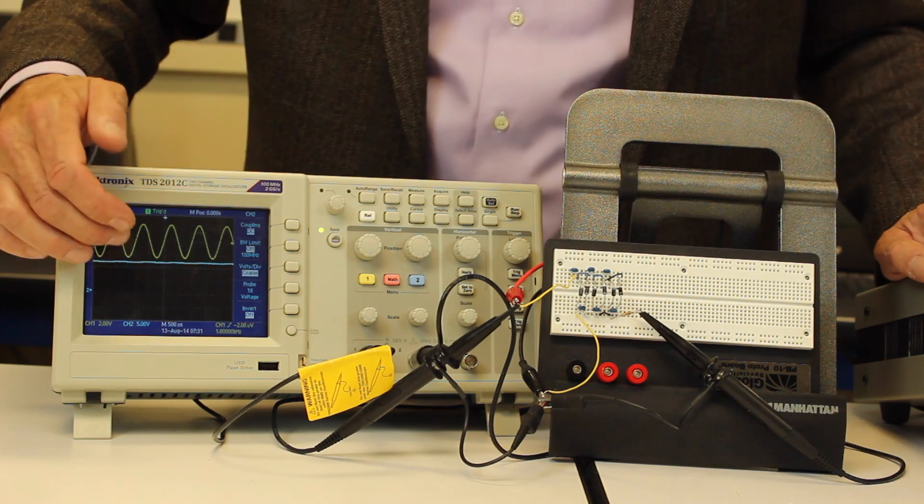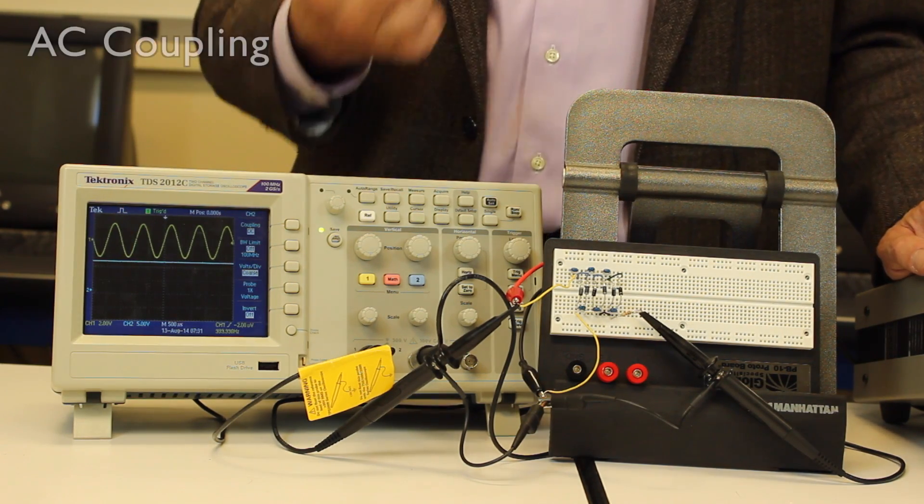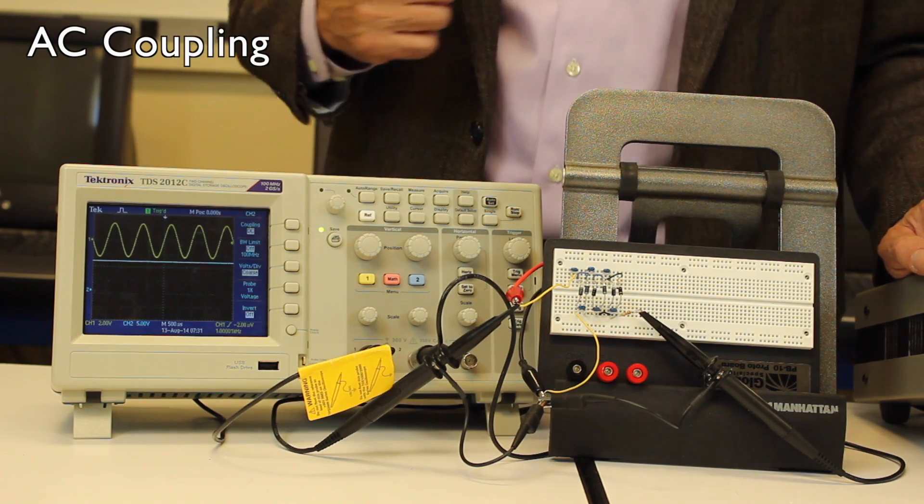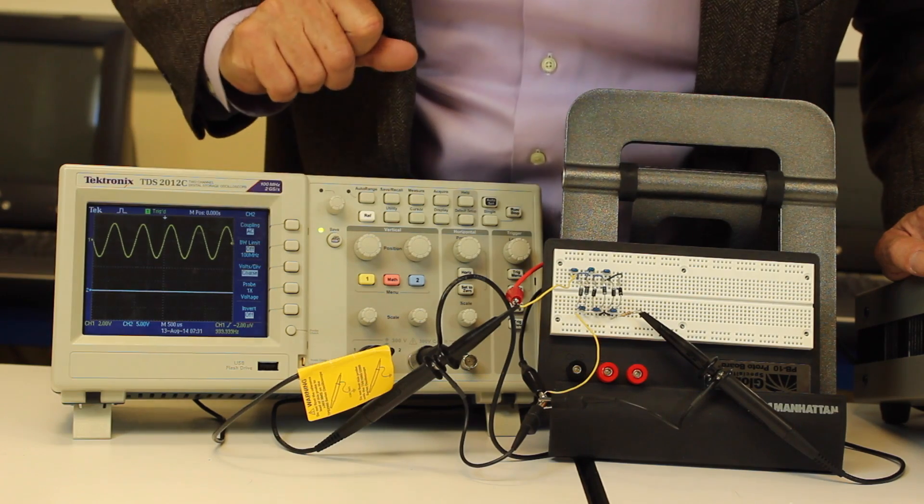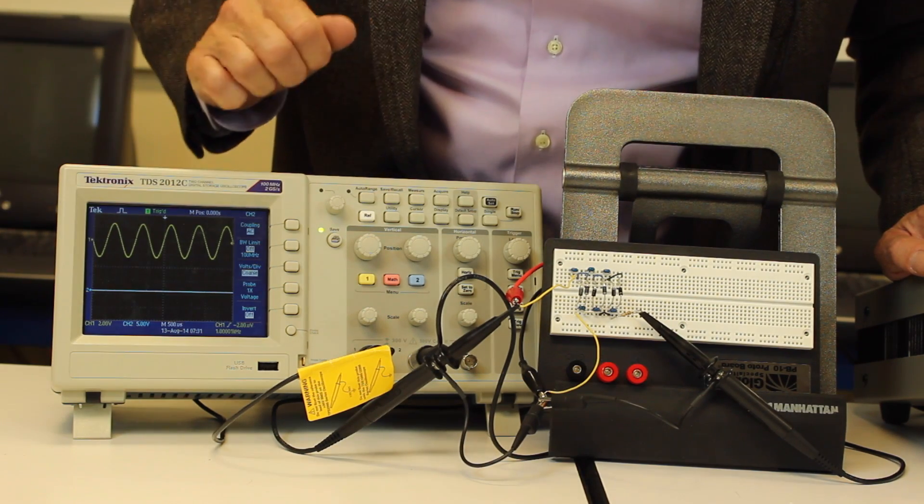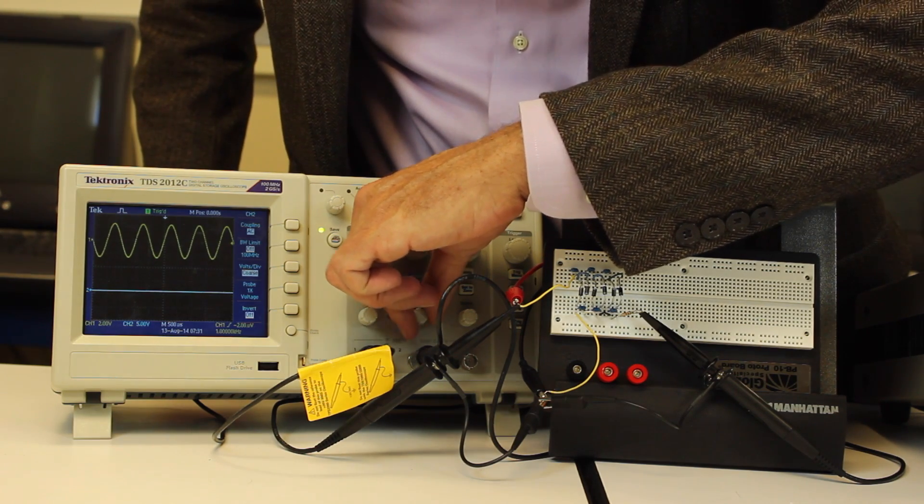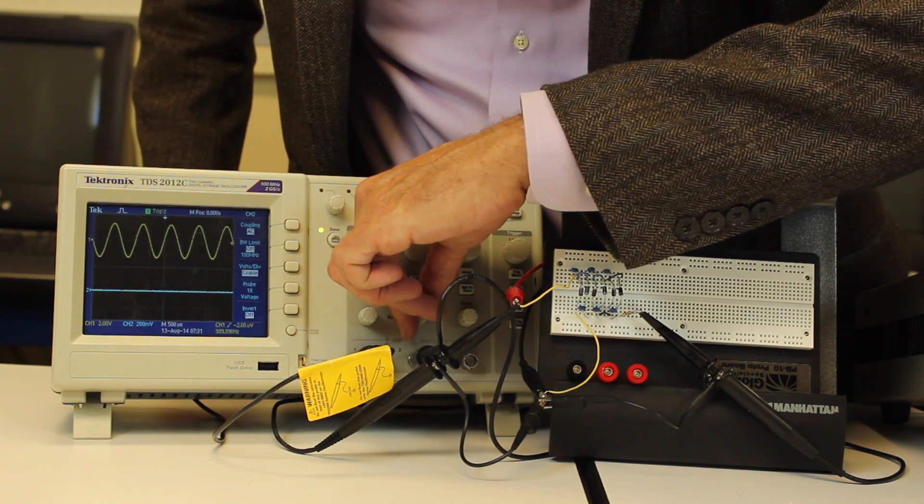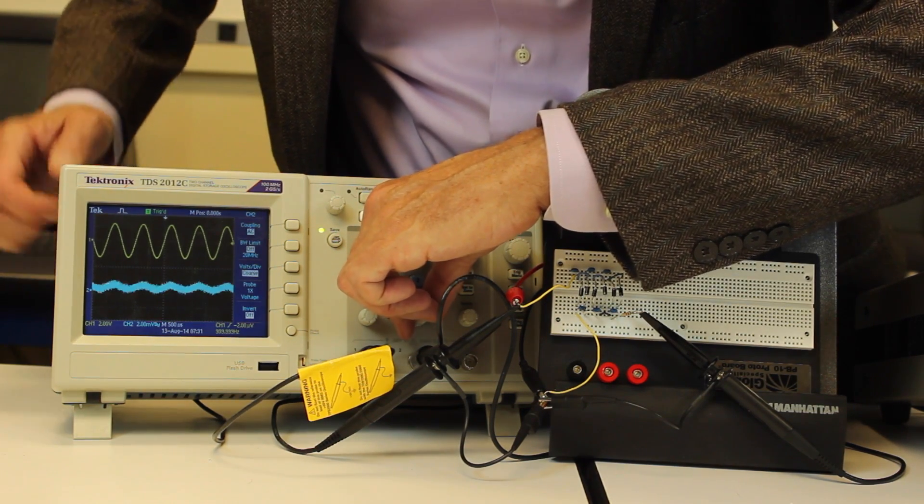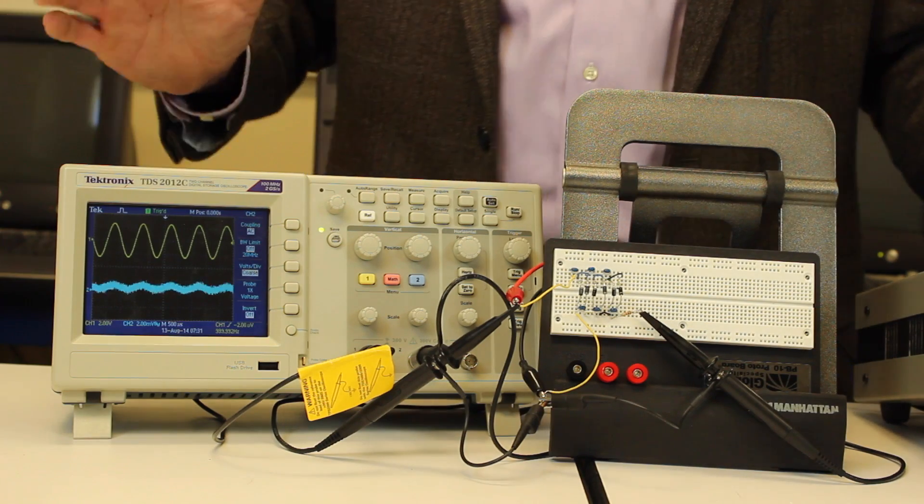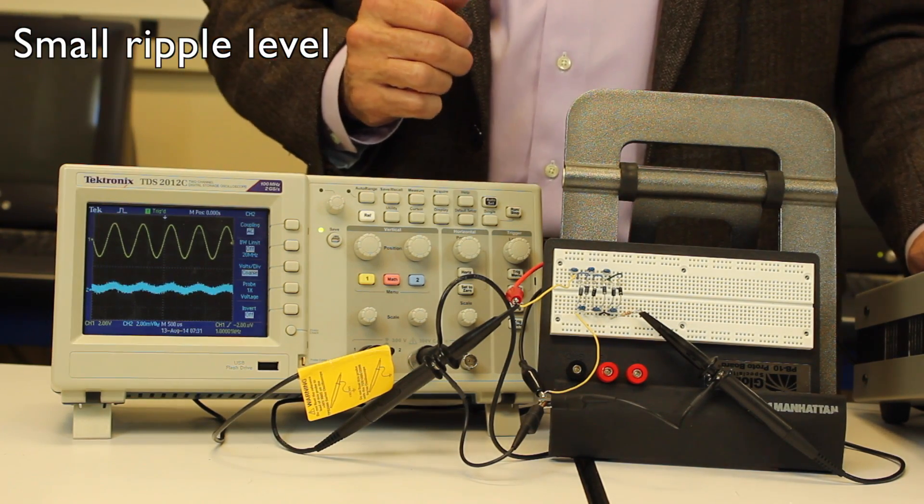And it looks fairly flat there, but this is on DC coupling. We noted we have to use AC coupling to see the ripple. So let's go over here on channel 2. We'll switch to AC coupling. Now it looks completely flat. We're now going to need to change the voltage scale to a smaller scale to see what that ripple looks like. And you see when I get down into the few millivolt, you can see the ripple there. So it's actually a pretty solid circuit here. Not much ripple at all the way it's set up here.